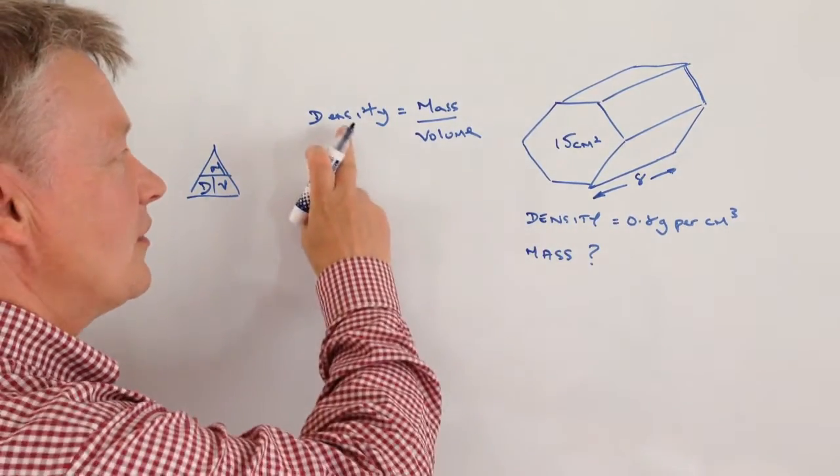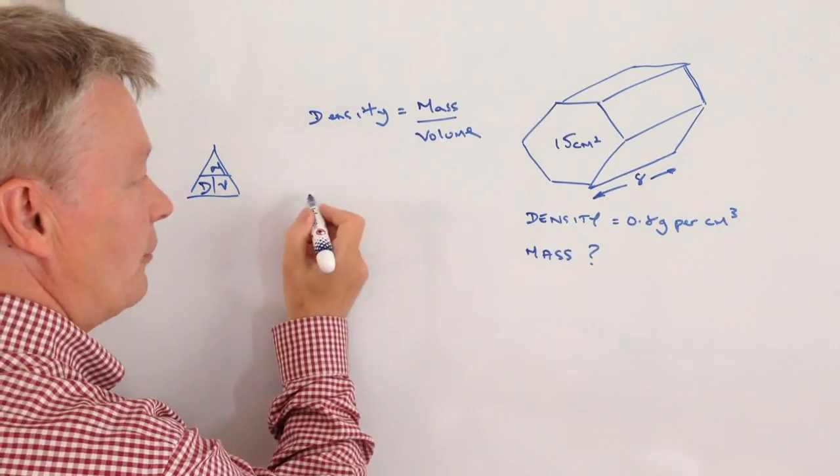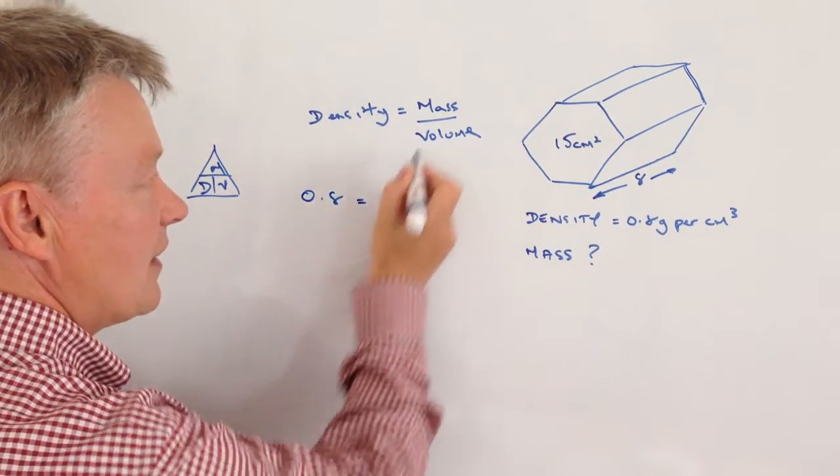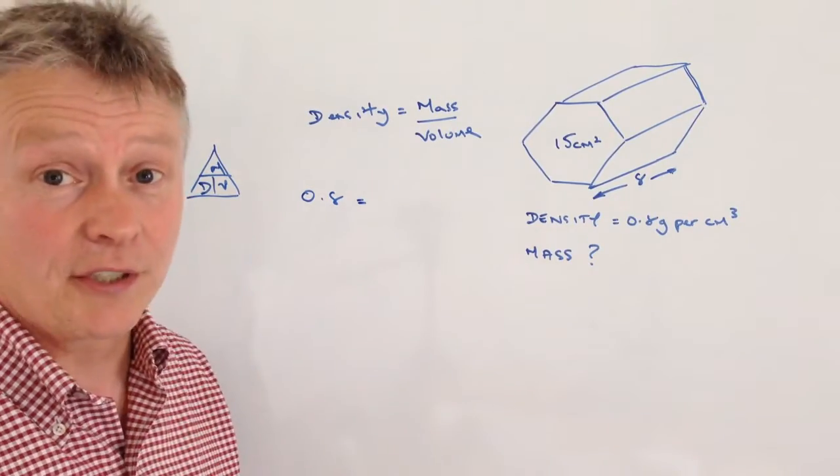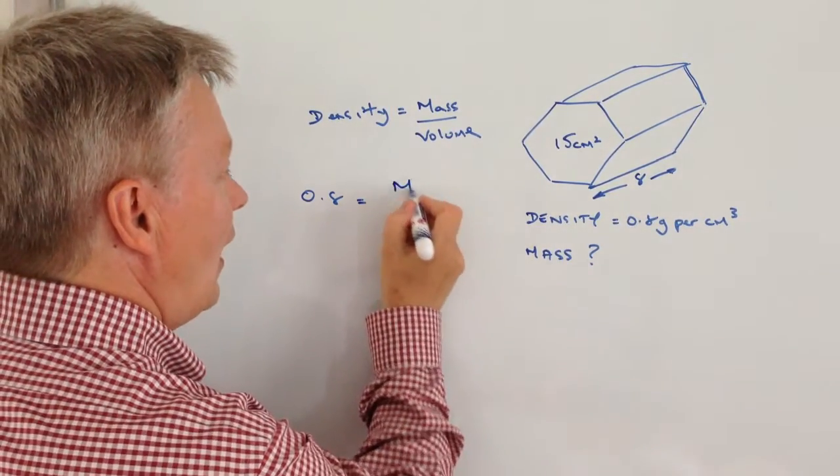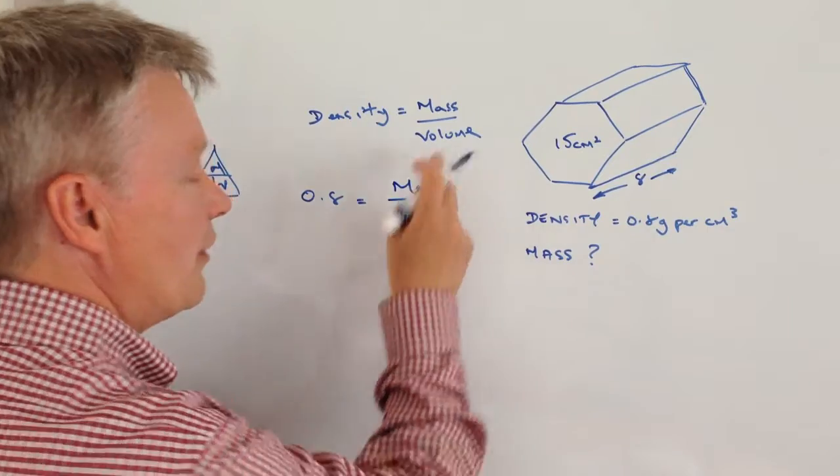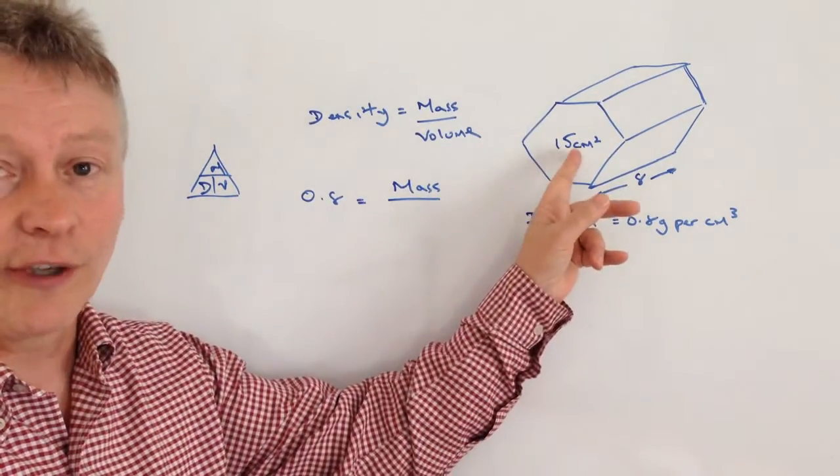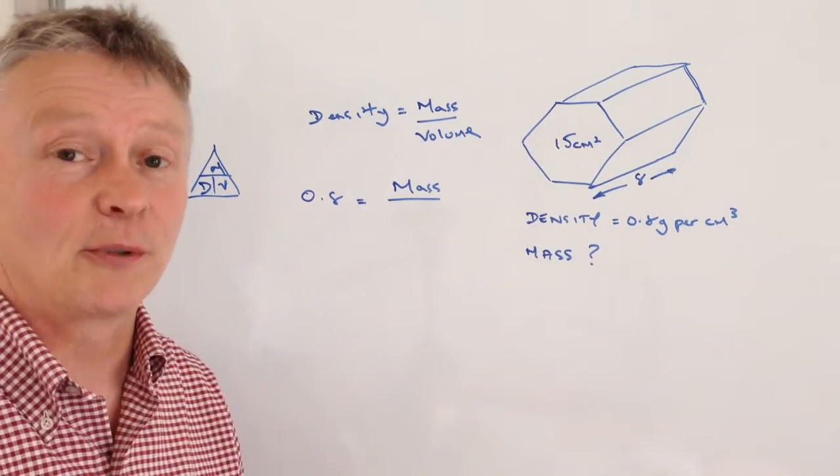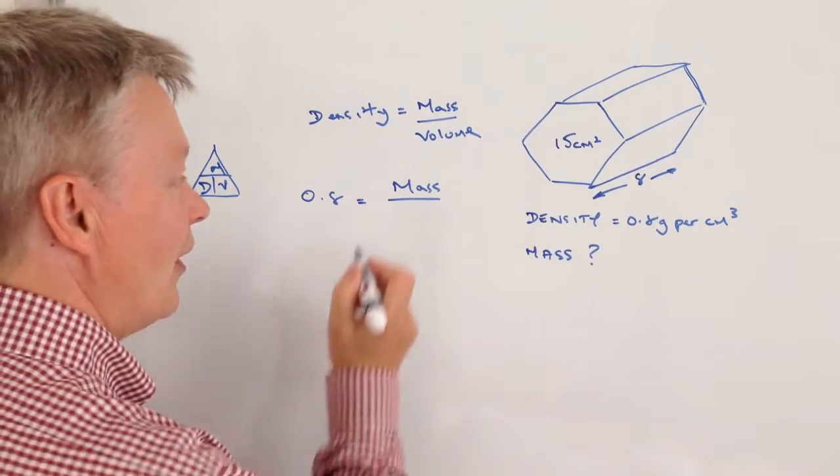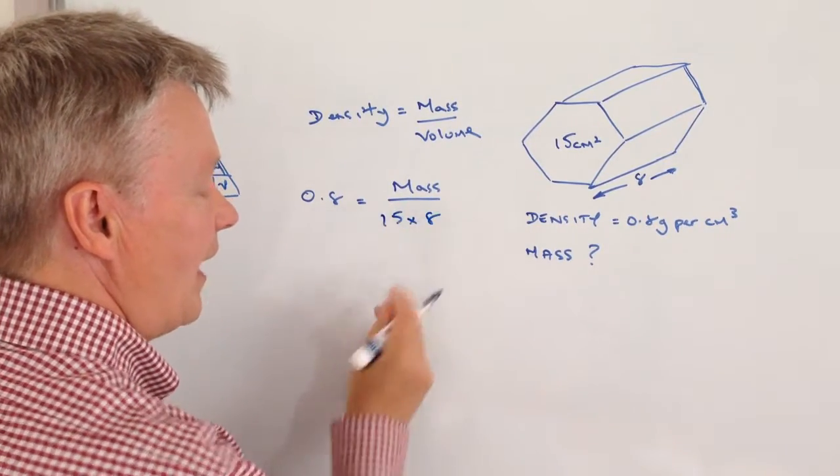So in other words, the density here is the information we've been given, which is 0.8. The mass is the information that we're looking for, and the volume is the information that we can find out from here because volume equals area times depth, so that's 15 times 8.